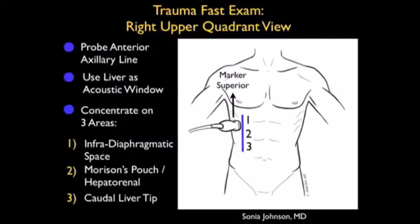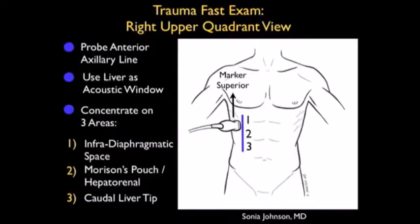Our first view from the right upper quadrant area will be position 1, the infradiaphragmatic space, just below the diaphragm and above the liver. Second, we'll move the probe slightly inferiorly to look into the traditional Morrison's pouch or hepatorenal interface. The last view is the caudal tip of the liver shown in position 3. It's very important to look at the caudal tip of the liver as this represents the beginning of the right pericolic gutter, where small amounts of fluid will pool before moving into Morrison's pouch.